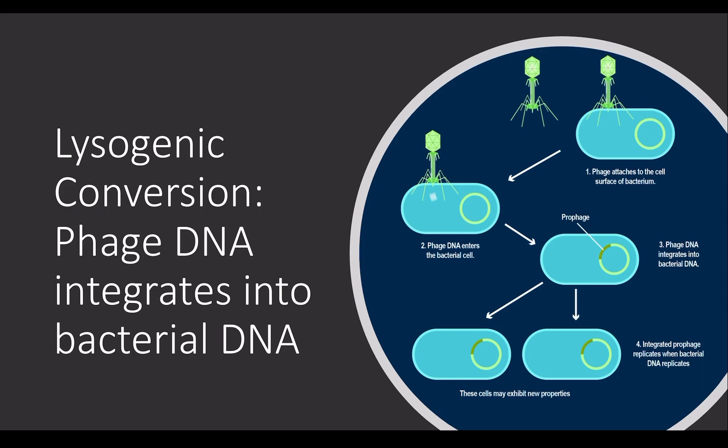The virus will lay dormant in the host cell. This means that the host cell will continue on as usual and even undergo binary fission as usual. However, this also means that the viral DNA will be replicated into each new cell, still continuing to be a part of the bacterial genome. The viral DNA can remain dormant for many, many generations until outside influences weaken the repressor genes, such as exposure to UV light.